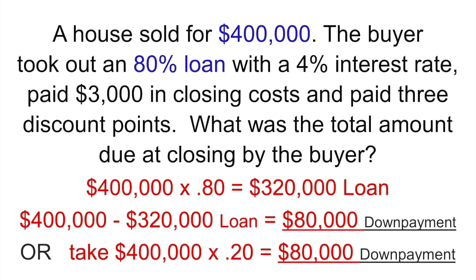Let's figure the down payment — there are two ways to do it. The first way: take the $400,000 price times 80%, which is 0.80, and that equals $320,000 for the loan. Then take $400,000 minus the $320,000 loan, and that equals $80,000 for the down payment. Or you can just take $400,000 times 20% and also get $80,000. That is the down payment — 20% of $400,000.